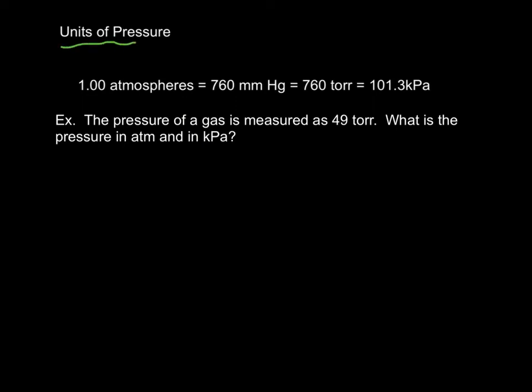So let's talk for a second about the units of pressure, because there's more than one. One atmosphere, which we usually abbreviate ATM, is the same thing as 760 millimeters of mercury. Or 760 torr. A millimeter of mercury and a torr are synonymous.